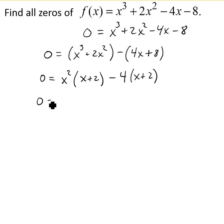Because they both have x plus 2, we can factor that out, which leaves us with x squared minus 4. We can factor x squared minus 4 further—it's a difference of squares, and it factors to x plus 2 times x minus 2.